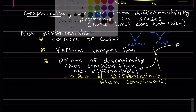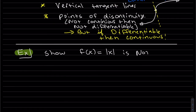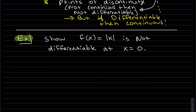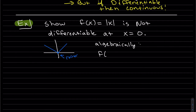Let's do an example: we're going to show the absolute value function is not differentiable at x equals zero. The graph has a corner there, and now we'll show it algebraically using the definition. By the definition of absolute value, f(x) = x if x ≥ 0 and −x if x < 0.